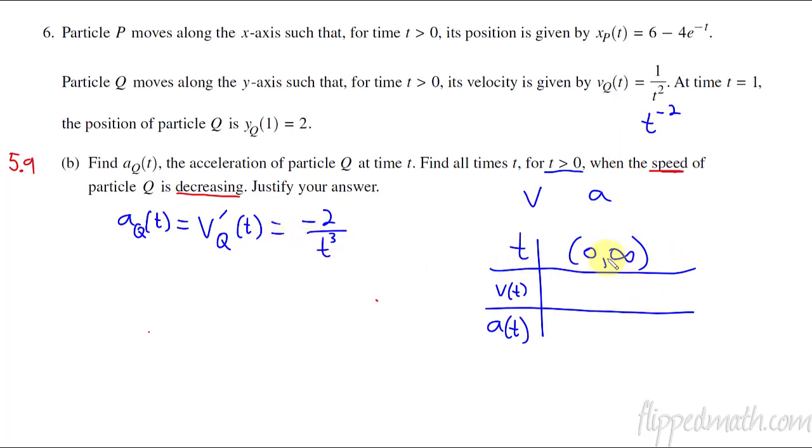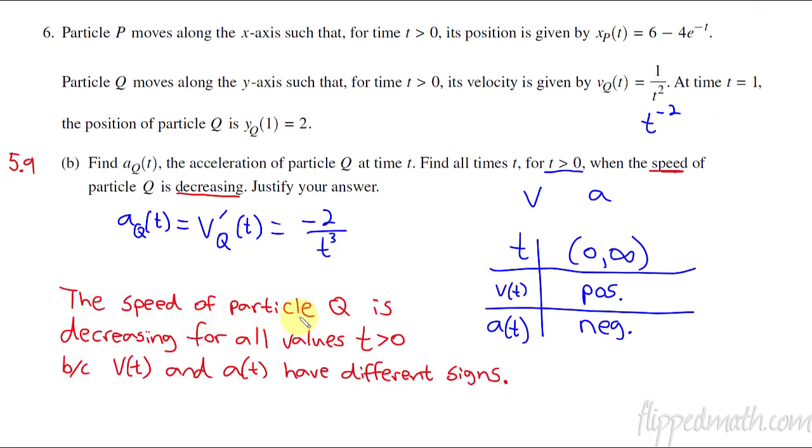So if we plug in a positive number as a t value into velocity, this is positive. And the acceleration, if you plug in a positive number into t, like just the number 1, then you get a negative answer. Velocity and acceleration have different signs. One's positive and one's negative. So the speed of particle Q is decreasing for all values of t greater than zero because V of t and A of t have different signs.